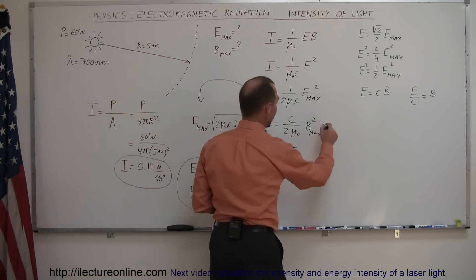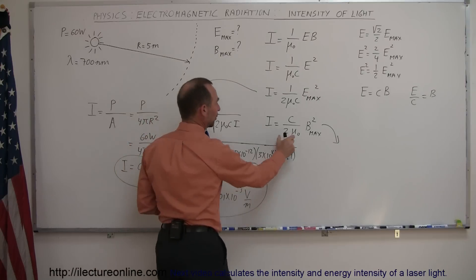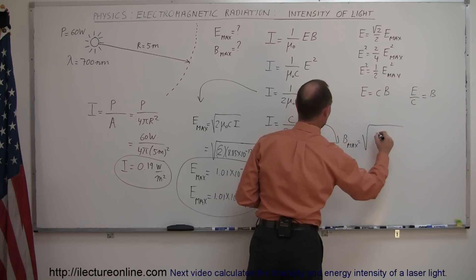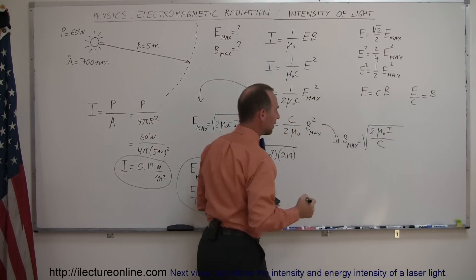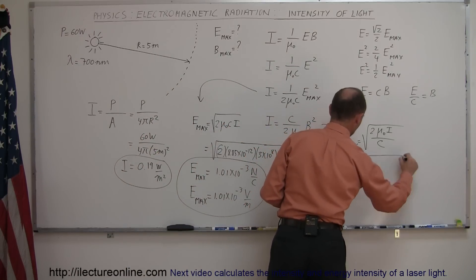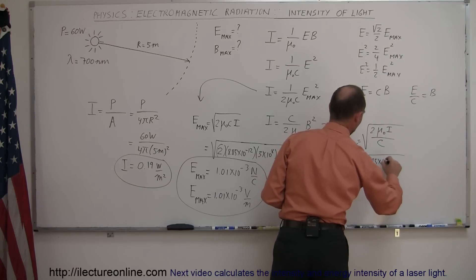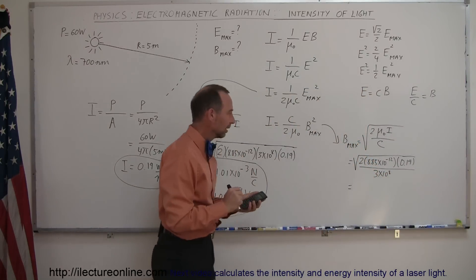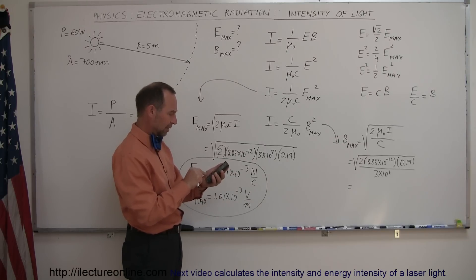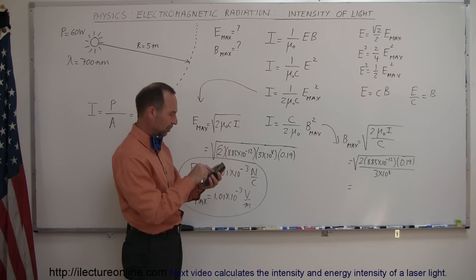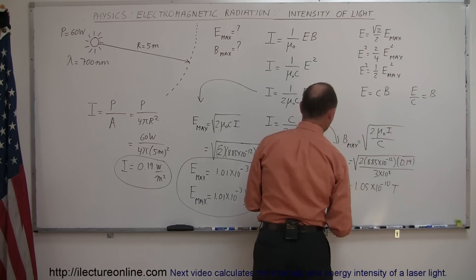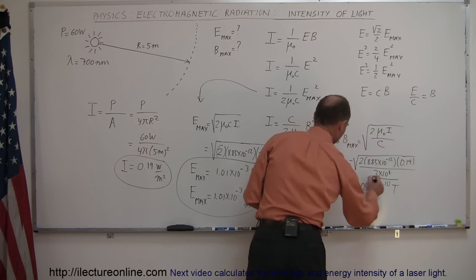Doing the same for the magnetic field, we solve for B_max: B_max equals the square root of 2 mu sub-naught times I divided by the speed of light C. Plugging in the numbers — square root of 2 times 8.85 times 10 to the minus 12 times 0.19, divided by 3 times 10 to the 8 — we end up with 1.05 times 10 to the minus 10 Teslas. That is B_max.